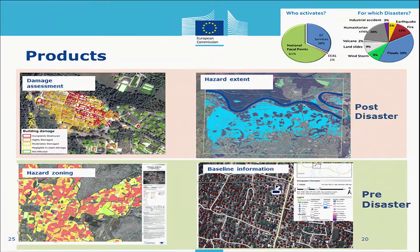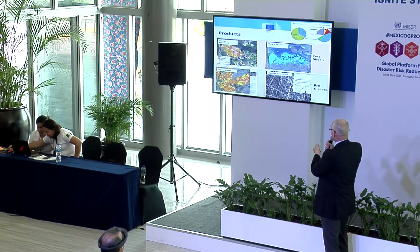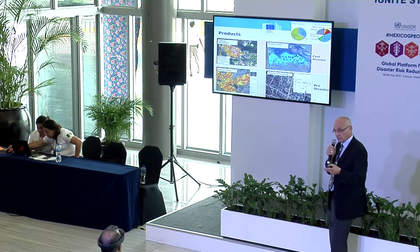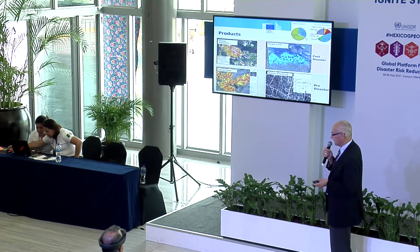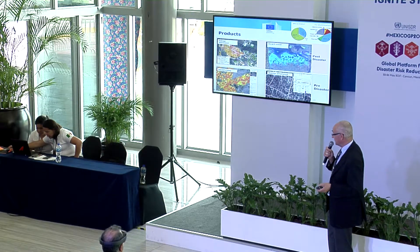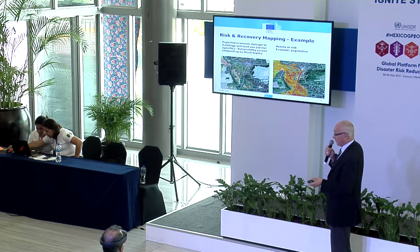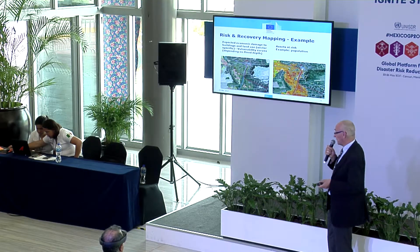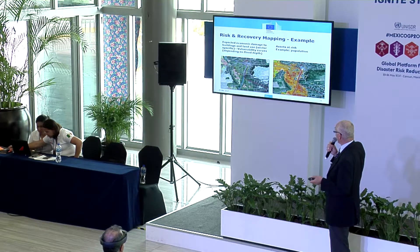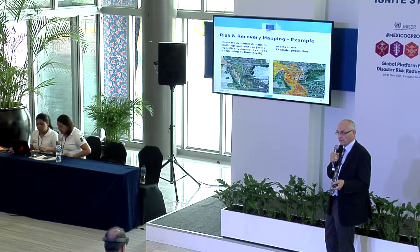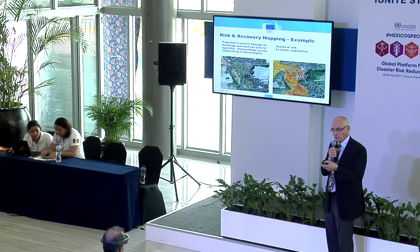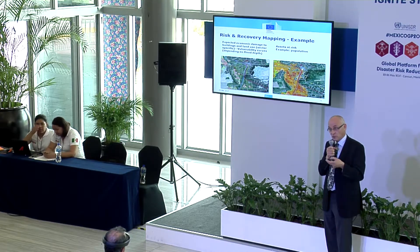Examples of products include damage assessment, hazard extent maps, hazard zoning, and baseline information. Bottom right, every single building has a dot used for risk analysis, including economic damage to buildings, assets at risk, and population at risk. Visit the website to learn more about it.